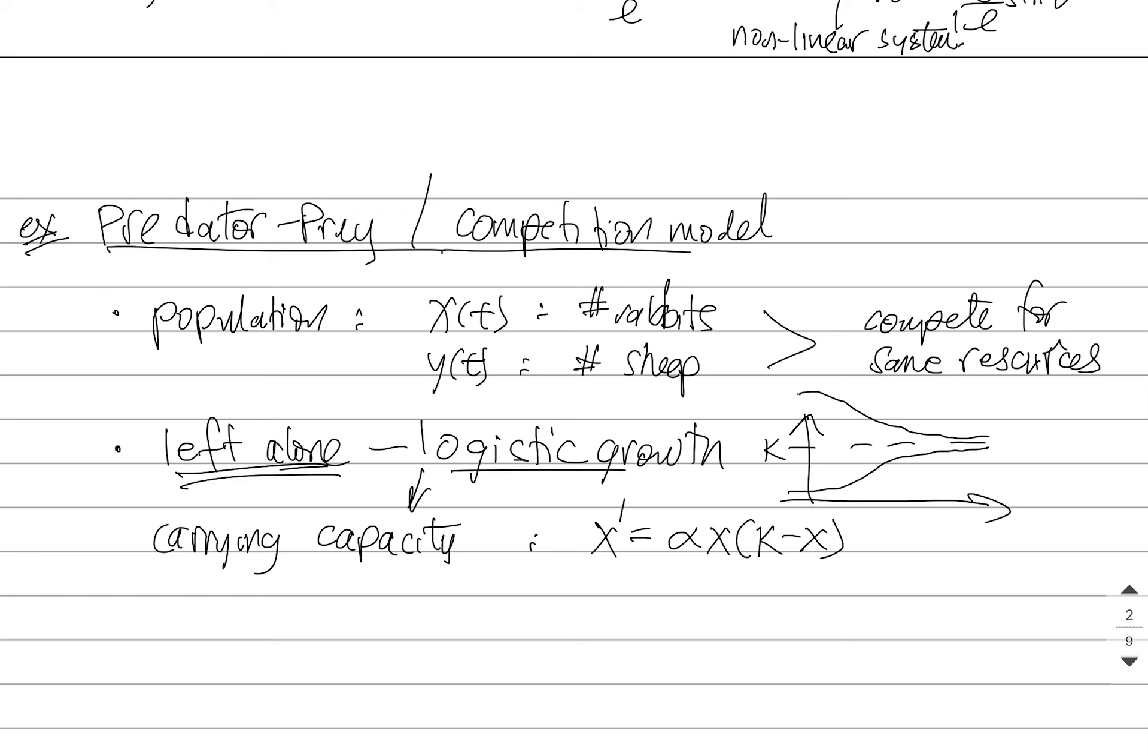But if you want to couple them, if you want to incorporate one with the other, we need to add additional terms. We need to add an additional competition term. And that competition term is going to depend on both populations. They're competing for food, so the presence of the other species causes some problems.